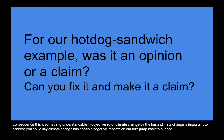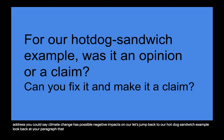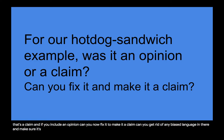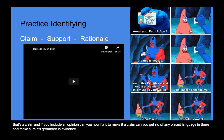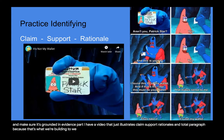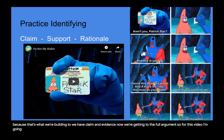Let's jump back to our hot dog sandwich example. Look back at your paragraph — the answer you wrote — and see if you included a statement that is an opinion or a statement that's a claim. If you included an opinion, can you now fix it to make it a claim? Can you get rid of any biased language and make sure it's grounded in evidence? For this next part, I have a video that illustrates claim, support, and rationale in a complete paragraph, because that's what we're building to. I'm going to play it, and I'd like you to identify the claim, support, and rationale in the video.